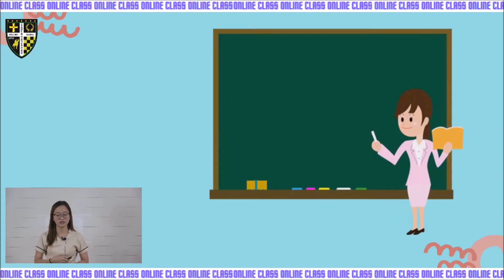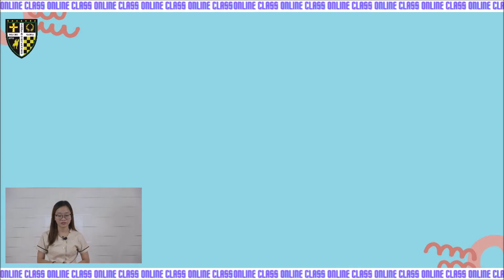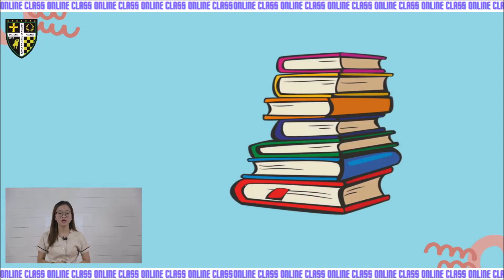The first one — can you see? There is a teacher and a blackboard. Where do you think the teacher stays? Isn't it in the school? You're correct, it's in the school. The next one is the books. Where can you find a book? Isn't it in the school also?